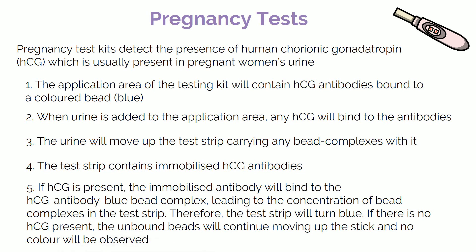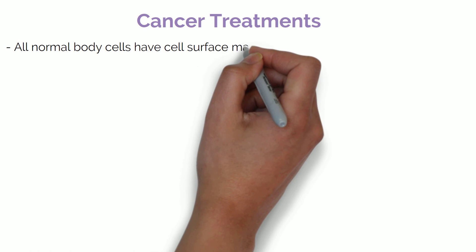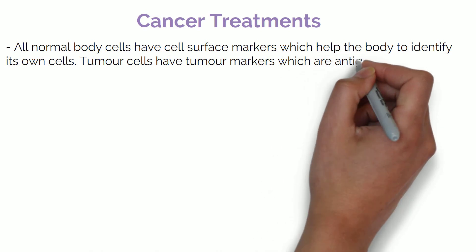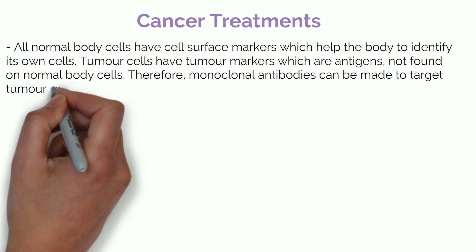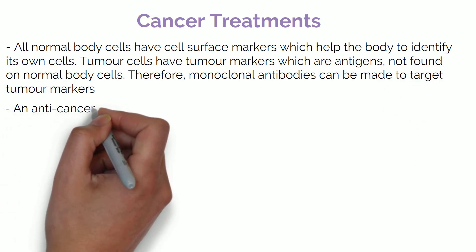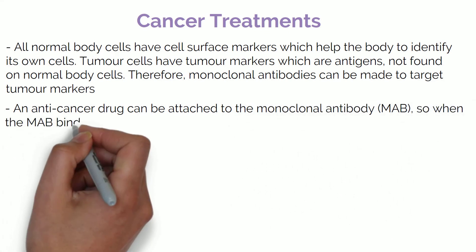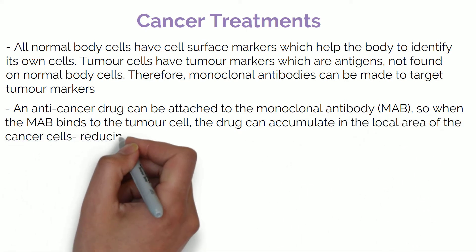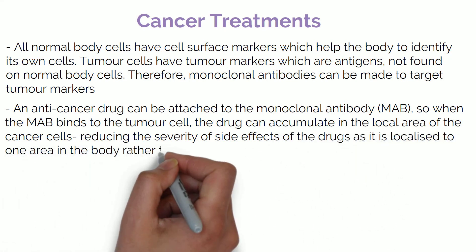As well as diagnostics, monoclonal antibodies can be used in the treatment of cancers. All normal body cells have cell surface markers which help to identify its own cells. Tumour cells have tumour markers, which are antigens not found on normal body cells. Therefore, monoclonal antibodies can be made to target tumour markers. An anti-cancer drug can be attached to the monoclonal antibody, so when it binds to the tumour cell, the drug can accumulate in the local area of the cancer cells. This reduces the severity of side effects as the drug is now localised to one area in the body, rather than systemic.